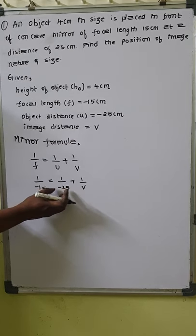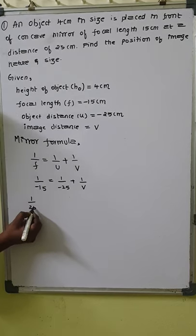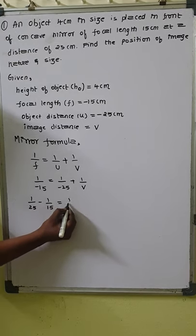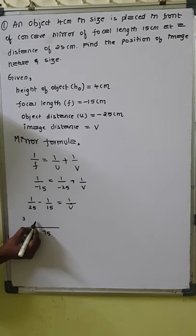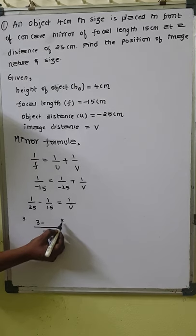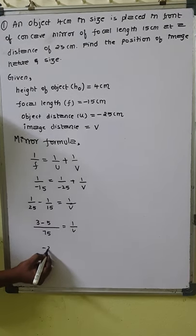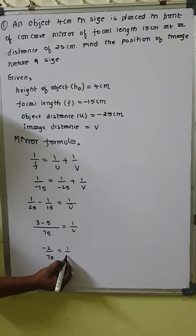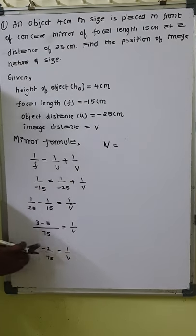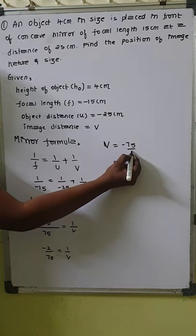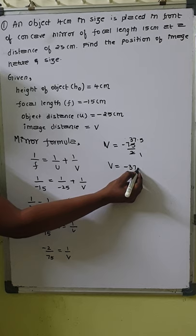Since v is the quantity we have to find, let us bring minus 1 by minus 25 — which is minus 1 by 25 — to this side, where it becomes positive. So 1 by 25 minus 1 by 15 equals 1 by v. LCM of 25 and 15 is 75. So we get 3 by 75 minus 5 by 75, which gives minus 2 by 75 equals 1 by v. Taking the reciprocal, v equals minus 75 by 2, which is minus 37.5 centimeter.